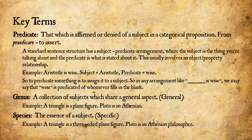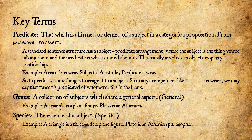Looking ahead to the next chapter: species is the essence of a subject — 'specific' comes from 'species.' Within a genus there are species. A triangle is a three-sided plane figure — a square and a circle are also plane figures and share the same genus, but a triangle's essence is having three sides. Plato is an Athenian philosopher — that specificity is what makes him who and what he is.